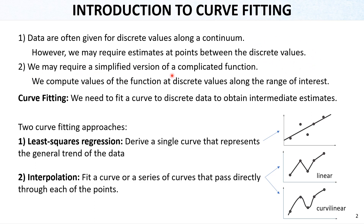We may require a simplified version of a complicated function, and we need to use that data to have this version of the function and compute values at discrete values along the range of interest. So curve fitting is about fitting a curve to discrete data to obtain intermediate estimates. Basically we have two curve fitting approaches. The first one is least squares regression, also called regression directly, which derives a single curve that represents the general trend of the data.